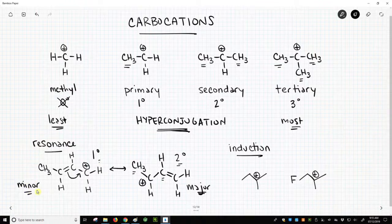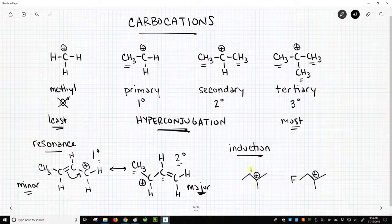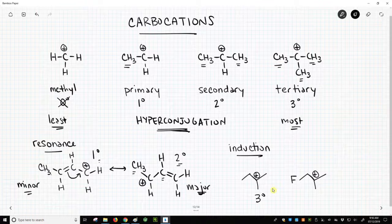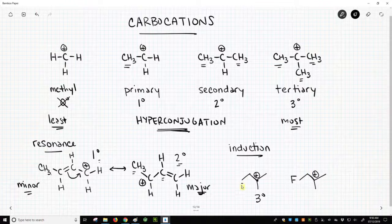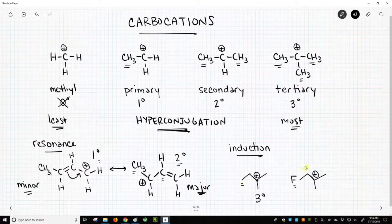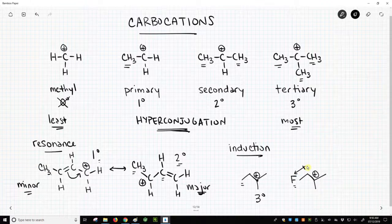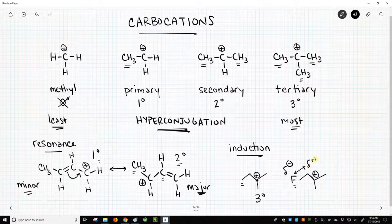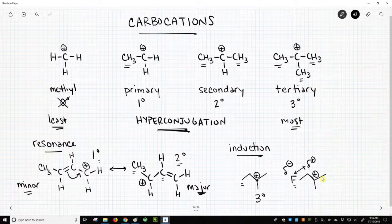We also can talk about inductive effects with carbocations. So here is a carbocation. This is a nice stabilized tertiary carbocation. The carbon has three attached carbon atoms. Now, in this case, we exchange this carbon for a fluorine atom. That fluorine is going to have a polarized carbon-sigma bond. That polarized bond is going to have a little bit of negative charge on fluorine, a little bit of positive charge on carbon. And in fact, this partial positive next to the positive of the carbocation is going to be destabilizing.